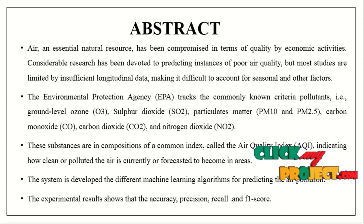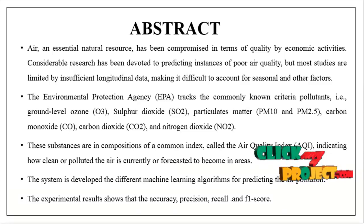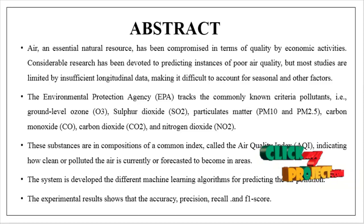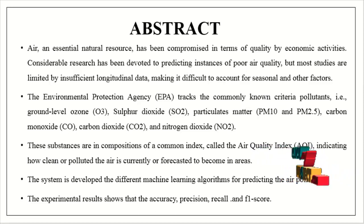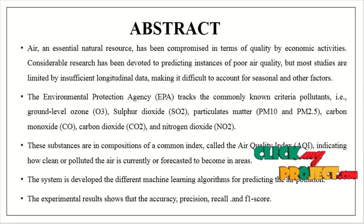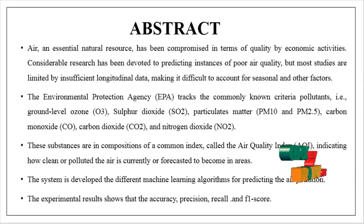An essential natural resource has been compromised in terms of quality by economic activities. Considerable research has been devoted to predicting instances of poor air quality, but most studies are limited by inefficient longitudinal data, making it difficult to account for seasonal and other factors. The Environmental Protection Agency tracks commonly known criteria pollutants like ground-level ozone, sulphur dioxide, particulate matter, carbon monoxide, carbon dioxide, and nitrogen dioxide. These substances are components of a common index called the Air Quality Index, indicating how clean or poor the air is currently or forecasted to become in areas.